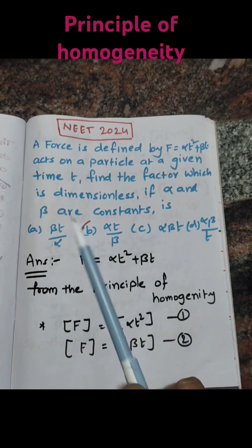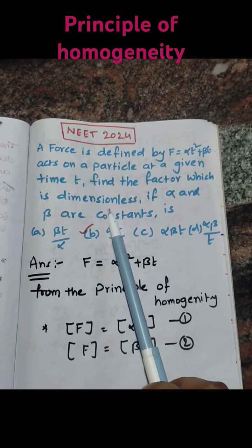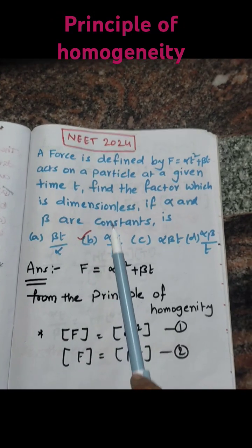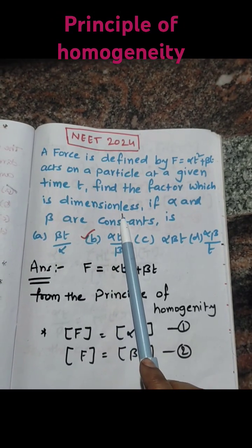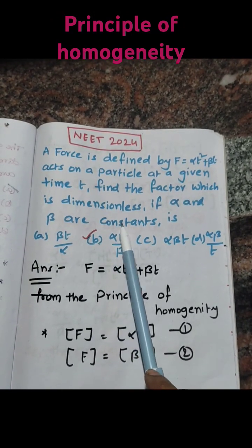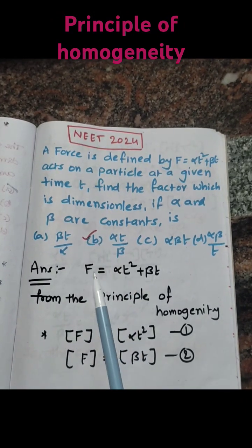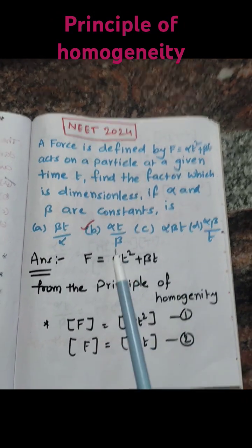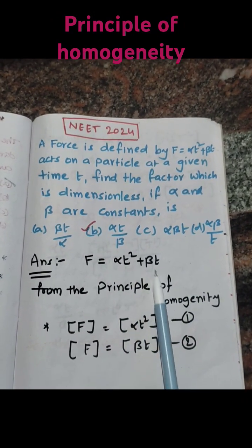Here you have to find out the dimensionless factor — that means the factor which has the dimensions M power 0, L power 0, T power 0. So here, how can we solve this problem? They have given us the force F equal to alpha t squared plus beta t.